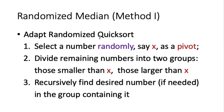Let's take a look at our first method. This method adapts the randomized quicksort that we have introduced before. First, we are going to select a number randomly from the set S — we call this number the pivot, and let X denote such a number. We compare every number in S with X, so that the remaining numbers are divided into two groups: one containing numbers smaller than X, and the other containing numbers larger than X. After that, we find the desired number recursively in the group that contains it.